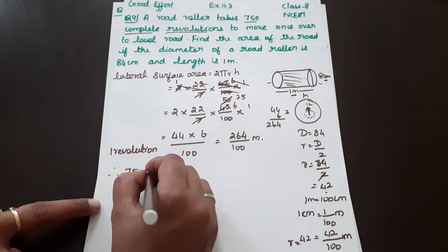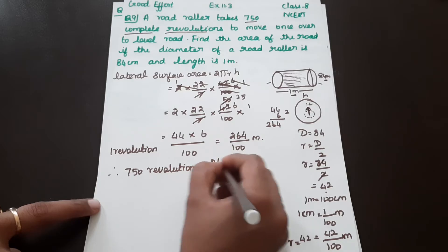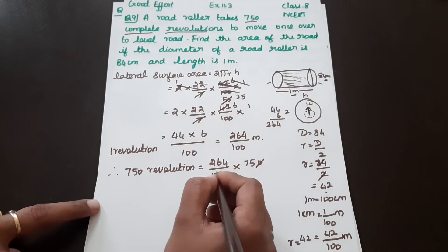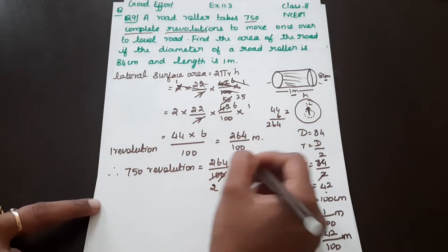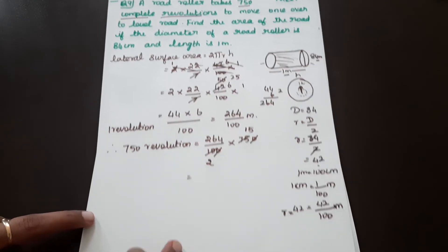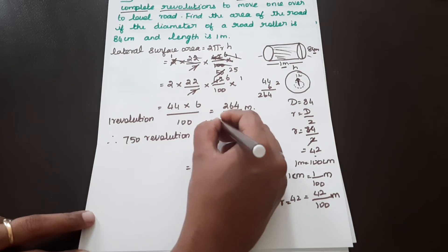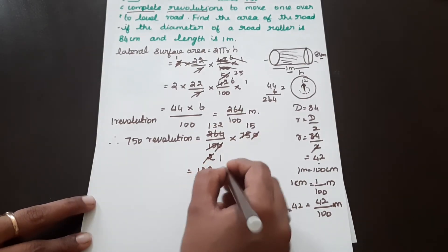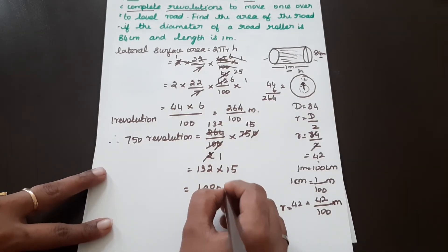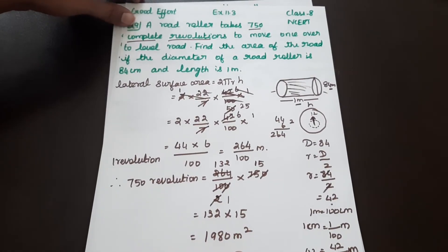For 750 revolutions: 750 times 264/100. Simplifying, 750/100 gives 7.5, and 7.5 into 264 equals 1,980 square meters. So 750 revolutions cover 1,980 square meters of road.